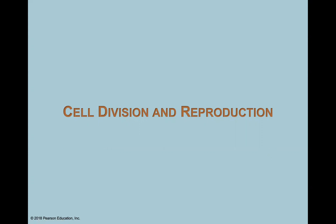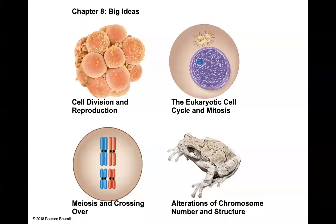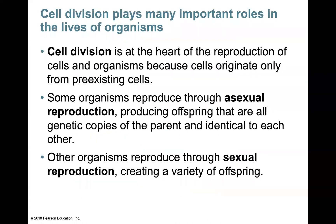Hello, everyone. Welcome back. Today, we are going to take a look at cell division and reproduction. This is a very important process for biological organisms, as we know that the cell is the most basic unit of life. So we're going to take a look at this process of cell division, how the eukaryotic cell cycle takes place, and sexual reproduction and some characteristics that are important for you to be familiar with.